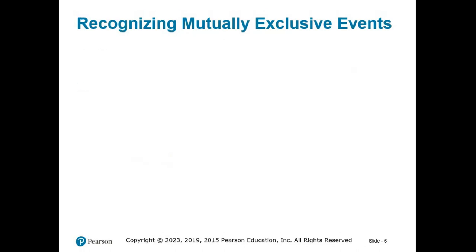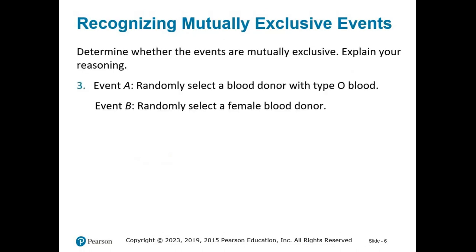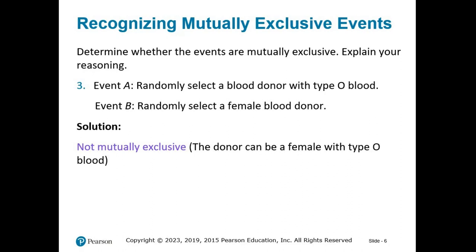Number 3: Event A, randomly select a blood donor with type O blood. Event B, randomly select a female blood donor. Ask yourself, can these events happen simultaneously? Just like the last one, you can be both a female blood donor and have type O blood, so these events are not mutually exclusive.